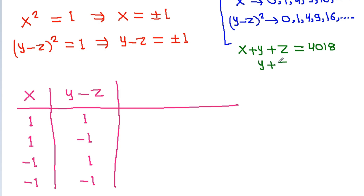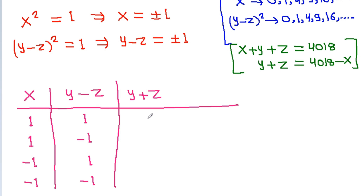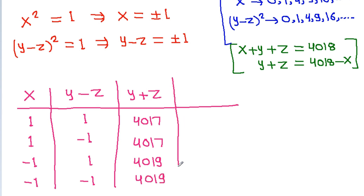Using x times (y + g) = 4018: when x = 1, y + g = 4017; when x = -1, y + g = 4019. If we add these two values we get 2y, and dividing by 2 gives us y.